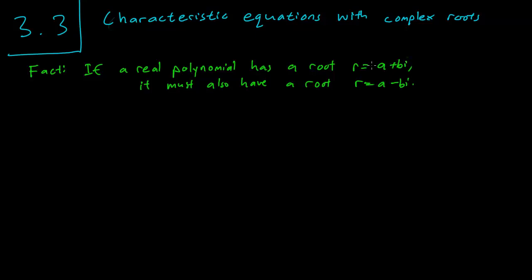I'm not going to go through the reasons for this algebra fact, but it is true. Whenever you have a real polynomial, if you have an a plus b i root, you must have an a minus b i root, where i is equal to the square root of minus 1.